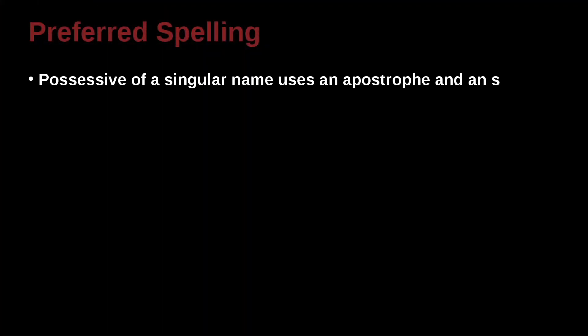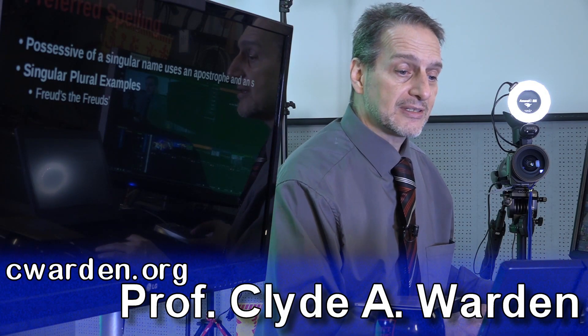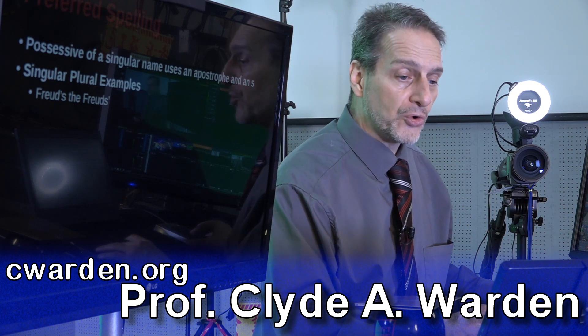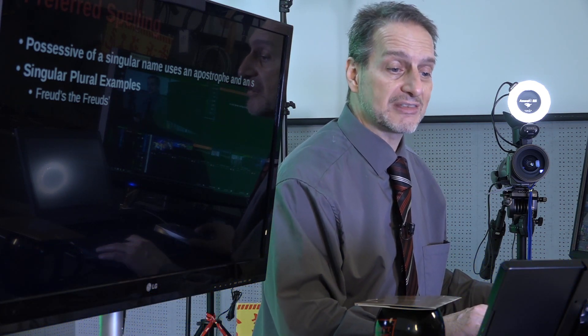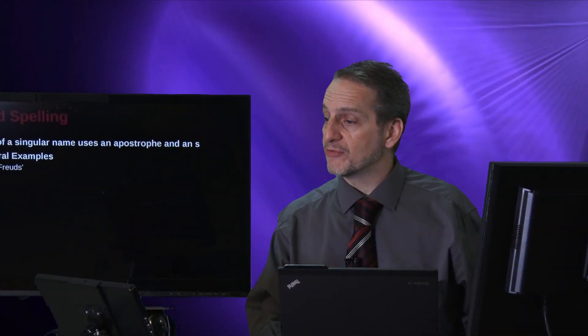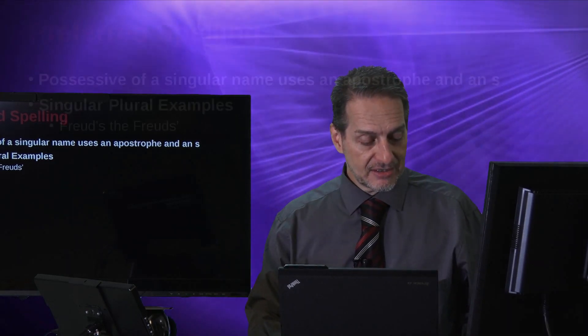Possessive and singular names can use an apostrophe like an S. Now I'm sure you've done this before. And singular plural examples include things like this one here, Freud. Freud's or the Freuds. So the first one being the individual Freud's theory. The second one being it belongs to a group of Freuds like the whole family. So all of these Freuds together.